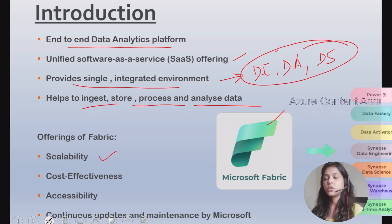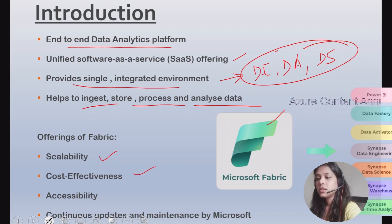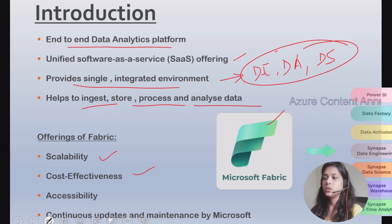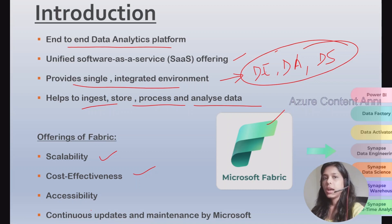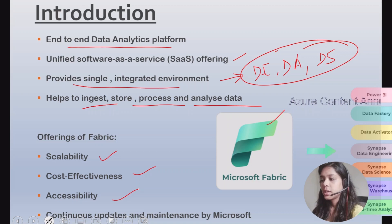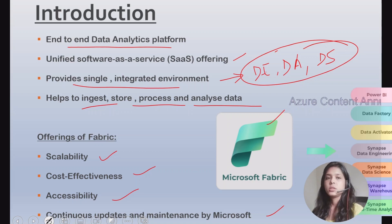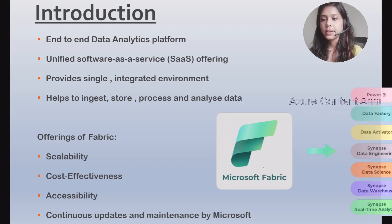Microsoft Fabric is highly scalable, meaning it can handle large amounts of users as well as large amounts of transactions or workloads. It is also cost-effective — since it is coming as a SaaS product the cost will be much less compared to other services. It is highly accessible as well; the only thing required to use Microsoft Fabric is an internet connection. Continuous upgrades and maintenance will be provided by Microsoft, as with any other Azure service.